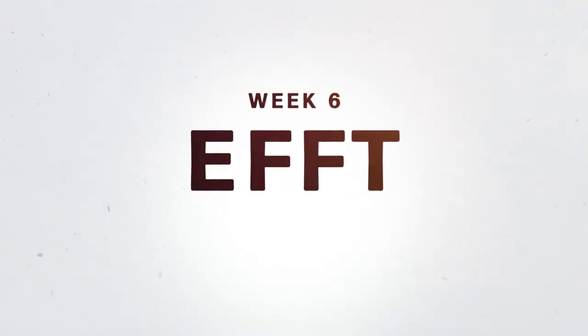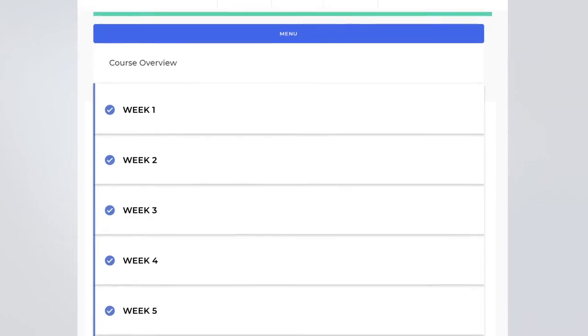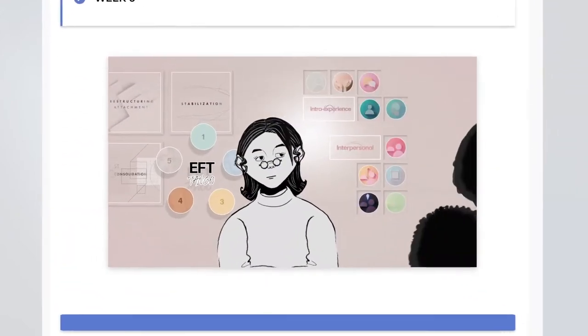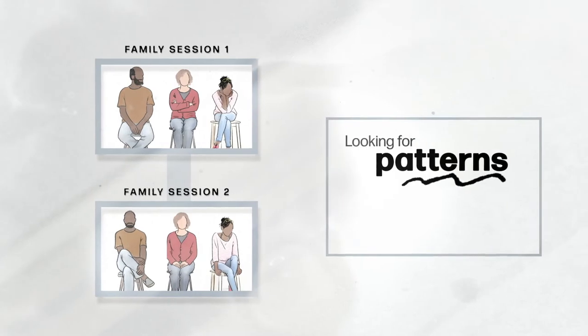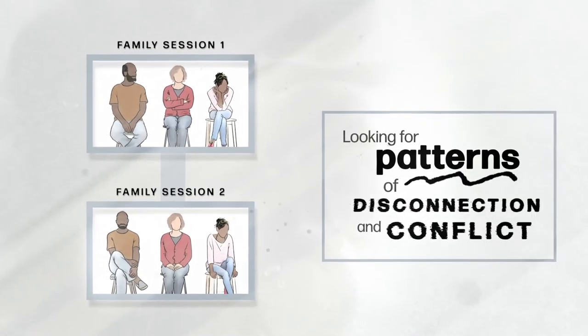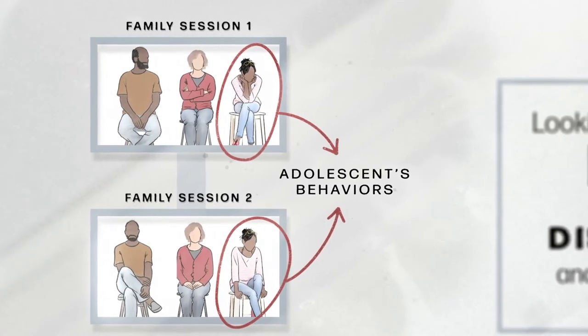This week, we're going to look at emotionally focused family therapy. When we do EFT with families, usually we see the family all together twice, and what we're looking at is patterns — patterns of disconnection, patterns of conflict. We're looking at the adolescent's behaviors, what happens in the family, how they understand the problem, and whether there's a sense of the attachment vulnerabilities underlying the adolescent's problematic behaviors. We look at whether the family can come together and where they abandon and reject each other — all those patterns in the first two sessions.